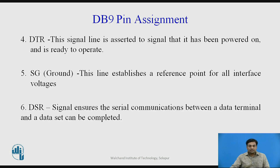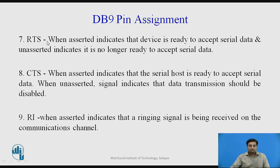Pin 5 is Ground, which establishes a common reference point for all interface voltages. Pin 6 is Data Set Ready (DSR), which ensures that serial communication between two data terminals is complete. Pin 7 is RTS (Request to Send); when asserted, it indicates the device is ready to accept serial data, and when unasserted, it is no longer ready. Pin 8 is CTS (Clear to Send); when asserted, the serial host is ready to accept data, and when unasserted, data transmission should be disabled. The last pin is Ring Indicator, which when asserted indicates a ringing signal is being received on the communication channel.